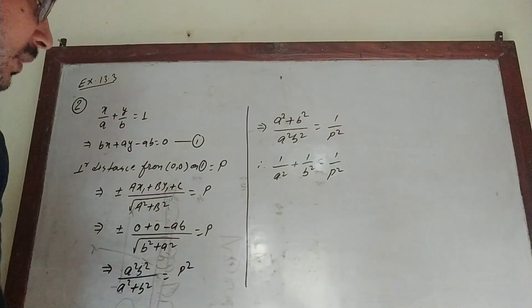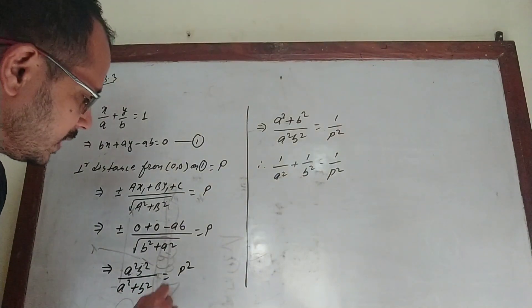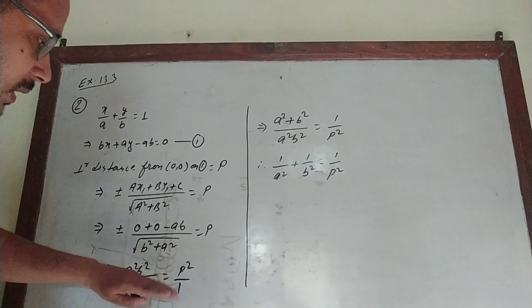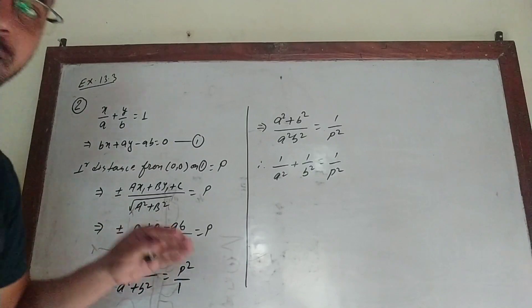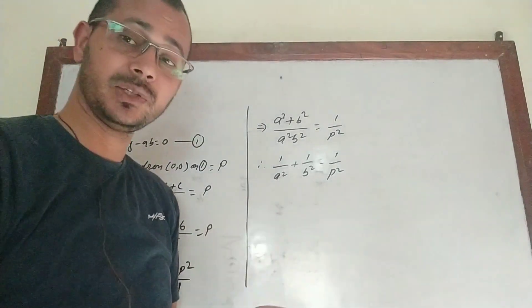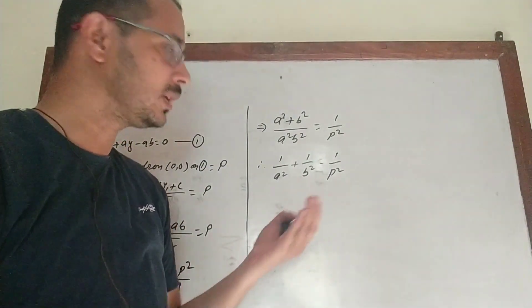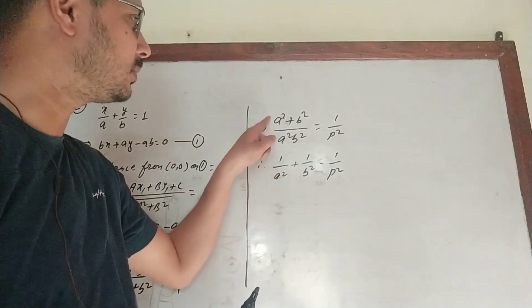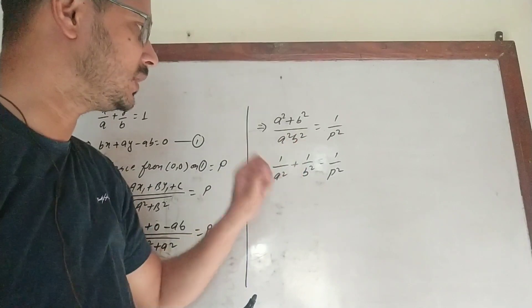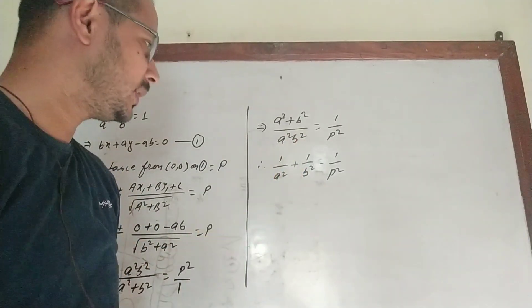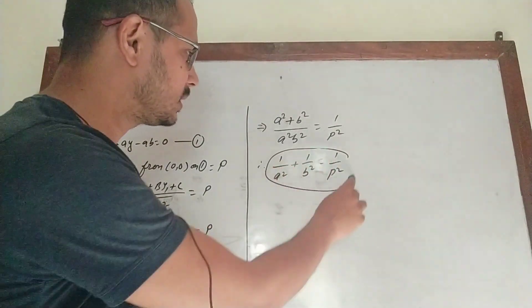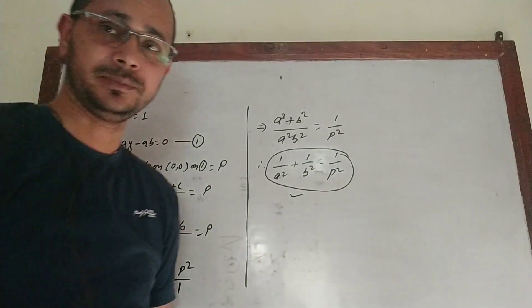We cannot cross-multiply directly, so we apply the invertendo rule: if a/b = c/d then b/a = d/c. Taking the reciprocal form: (a² + b²) / (a²b²) = 1/p². Separating terms: a²/(a²·b²) + b²/(a²·b²) simplifies to 1/b² + 1/a² = 1/p². This is what we needed to prove — an important board exam question.